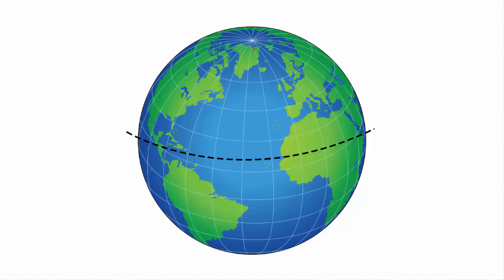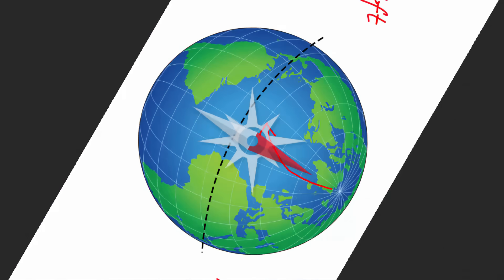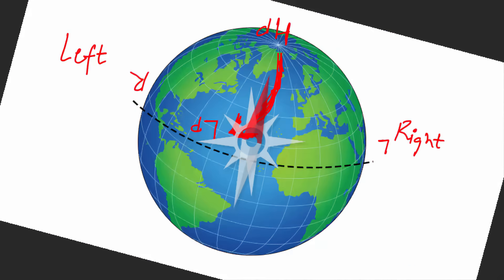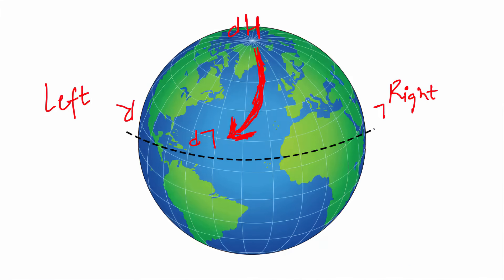Due to Coriolis force, air in the northern hemisphere gets deflected to the right side. You might think it is going towards the left, but you have to see it from the direction in which the wind is moving. If you rotate the picture and put yourself in the path of the wind, you will see that air in the northern hemisphere curves to the right while moving from high pressure to the low pressure area. Similarly, in the southern hemisphere, air is deflected to the left side while moving from high pressure to low pressure area.